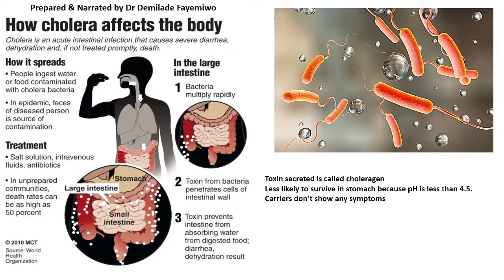How does cholera affect the body? It is an intestinal infection. The bacteria go into the large intestine, where they multiply to large numbers and secrete a toxin called choleragen. This toxin penetrates the cells of the intestinal wall and prevents the intestines from absorbing water from digested food. As a result, all that water tries to leave the body, resulting in severe diarrhea. People become infected when they eat food contaminated with the cholera bacteria or drink contaminated water.